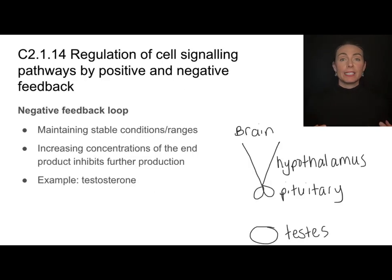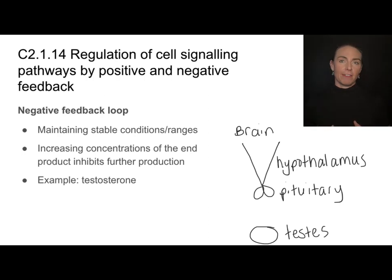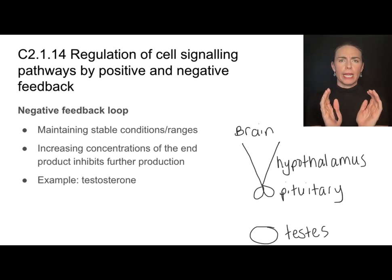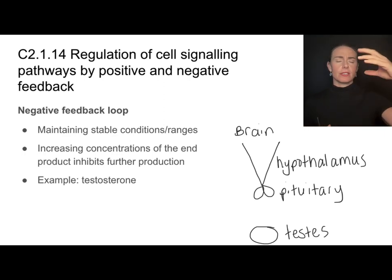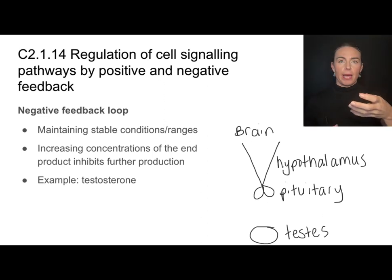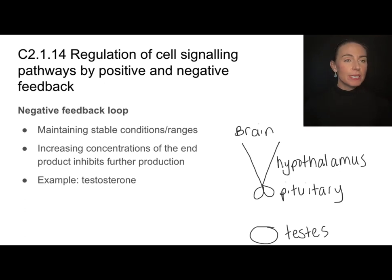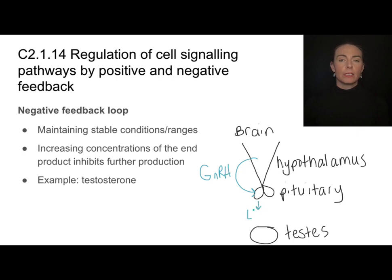We'll end this video by summarizing two major types of feedback mechanisms used by cell signaling pathways: positive and negative feedback loops. Negative feedback loops are really important for maintaining homeostasis—they keep values within a relatively narrow and stable range. If something increases in concentration a lot, a set of steps will inhibit further production, bringing that concentration back down. A great example is testosterone. Testosterone is produced in the testes. As we discussed, the hypothalamus secretes GnRH, which causes the pituitary to release luteinizing hormone.